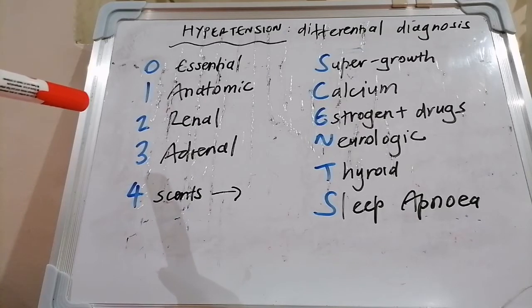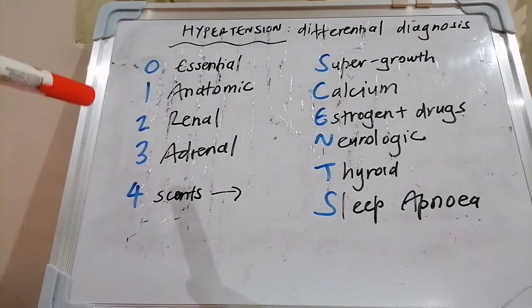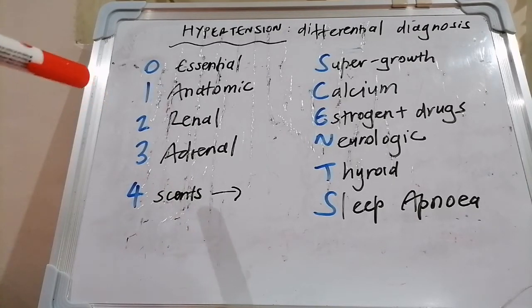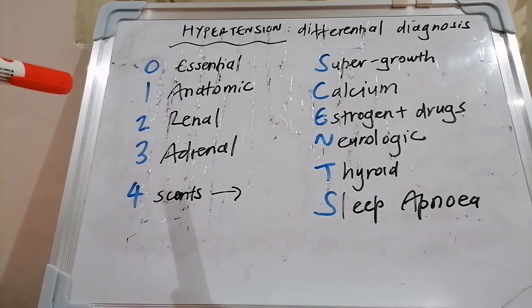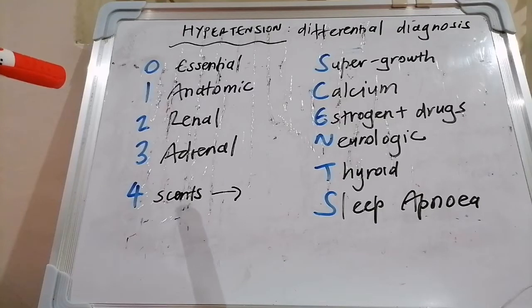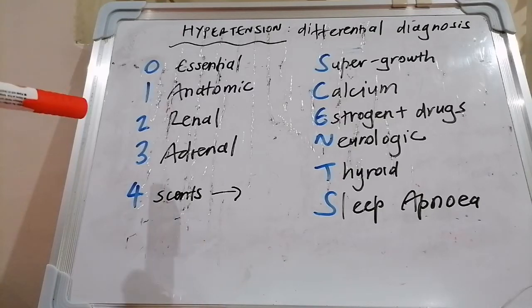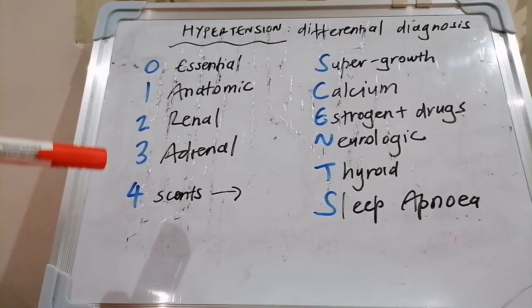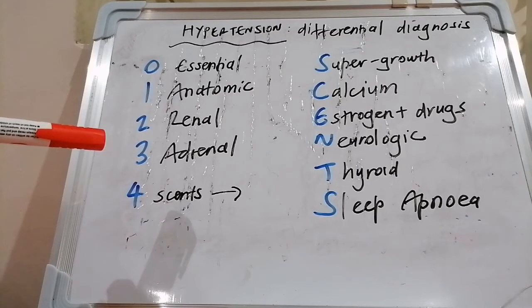Consider renal artery stenosis in someone who has a renal bruit and hypertension in the context of hypokalemia. Remember renal artery stenosis can be caused by fibromuscular dysplasia or by atherosclerosis.